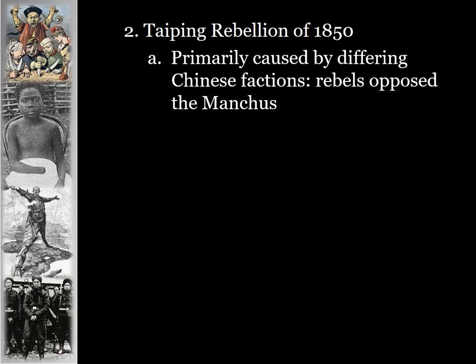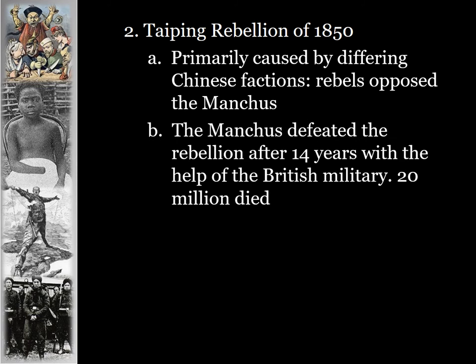The Taiping Rebellion of 1850 was primarily caused by differing Chinese factions opposed to the Chinese government under the Manchus. The Manchus defeated the rebellion, but it took 14 years with the help of the British military. Therefore the British felt they had a say in the region — which is why when the second Opium War happened, the unfavorable terms for China were even harsher. In the Taiping Rebellion, 20 million Chinese died.